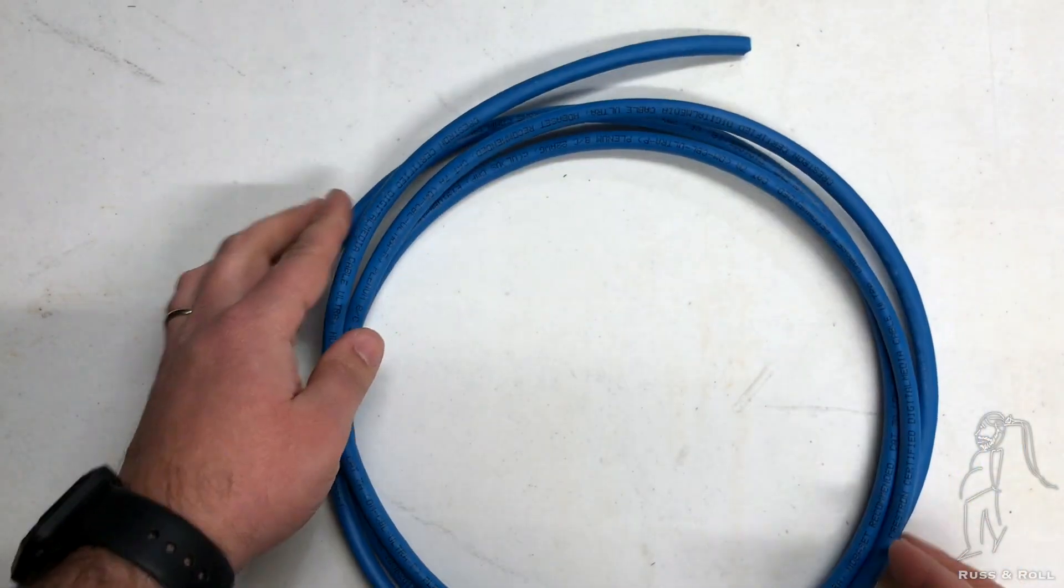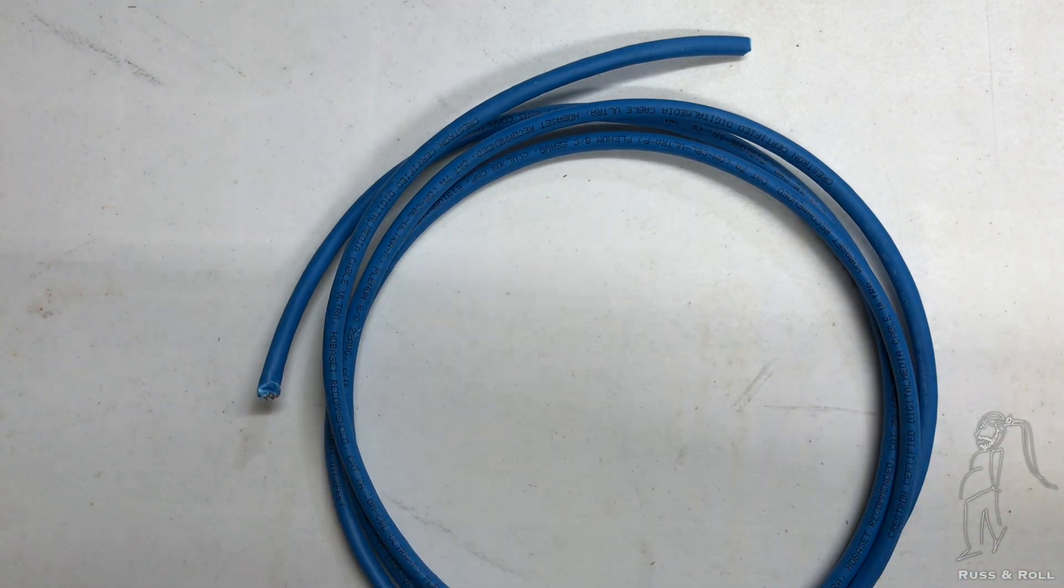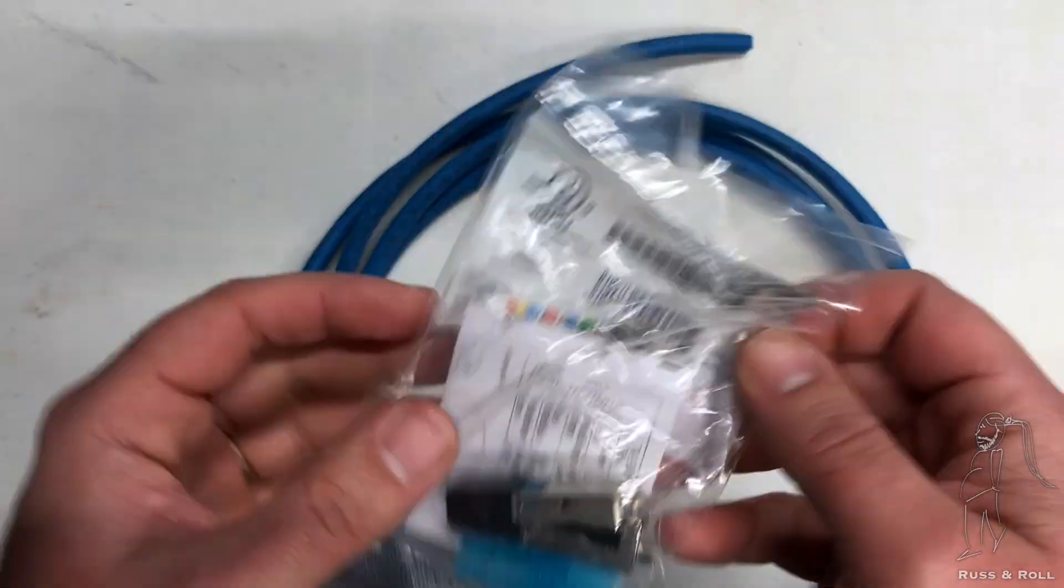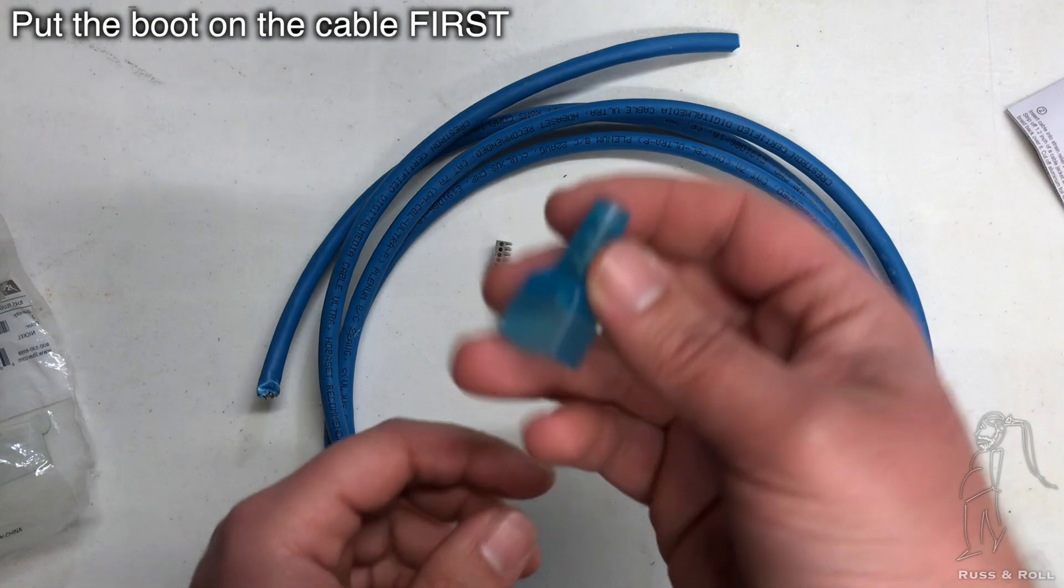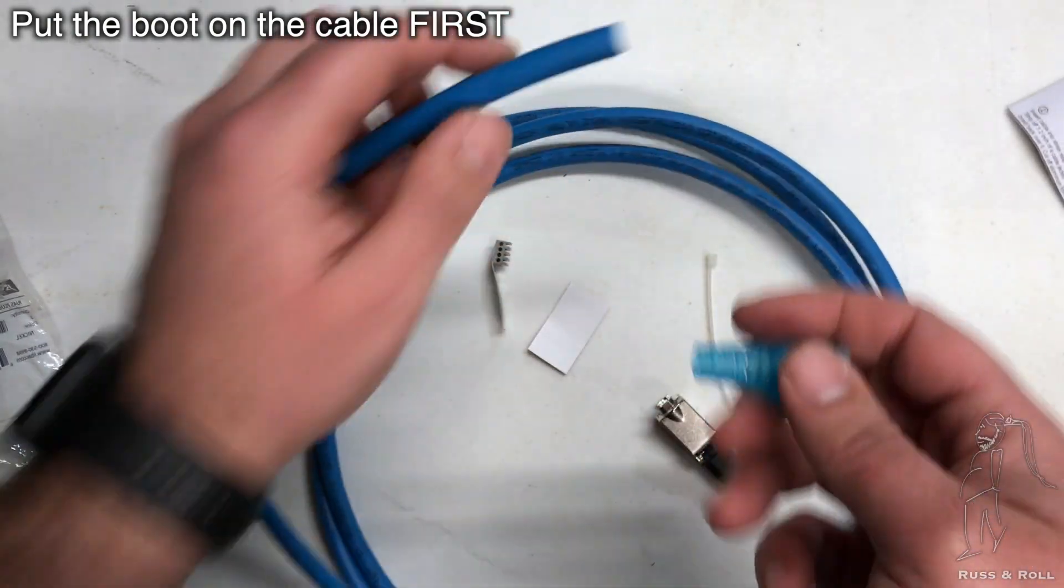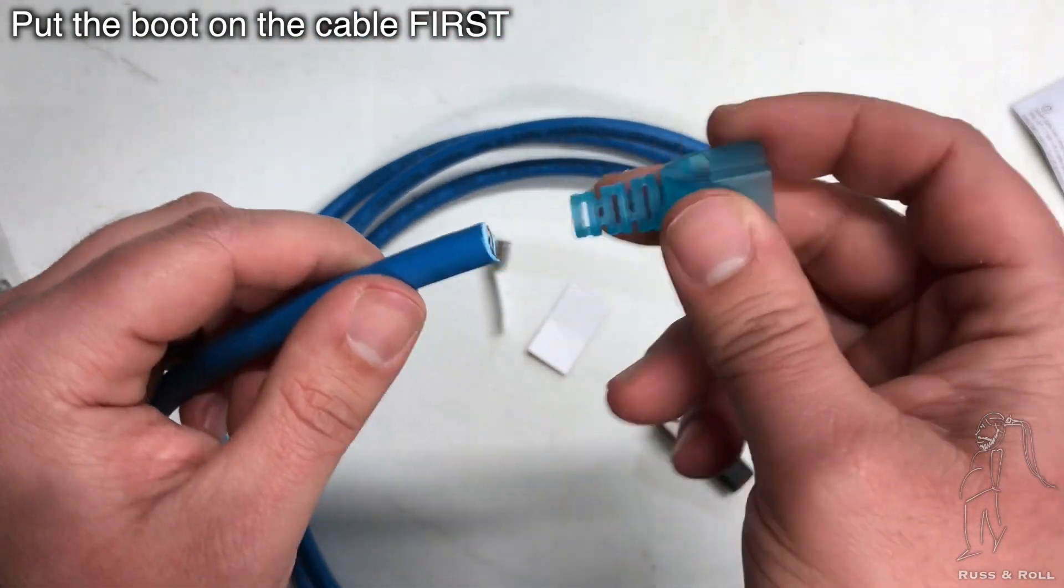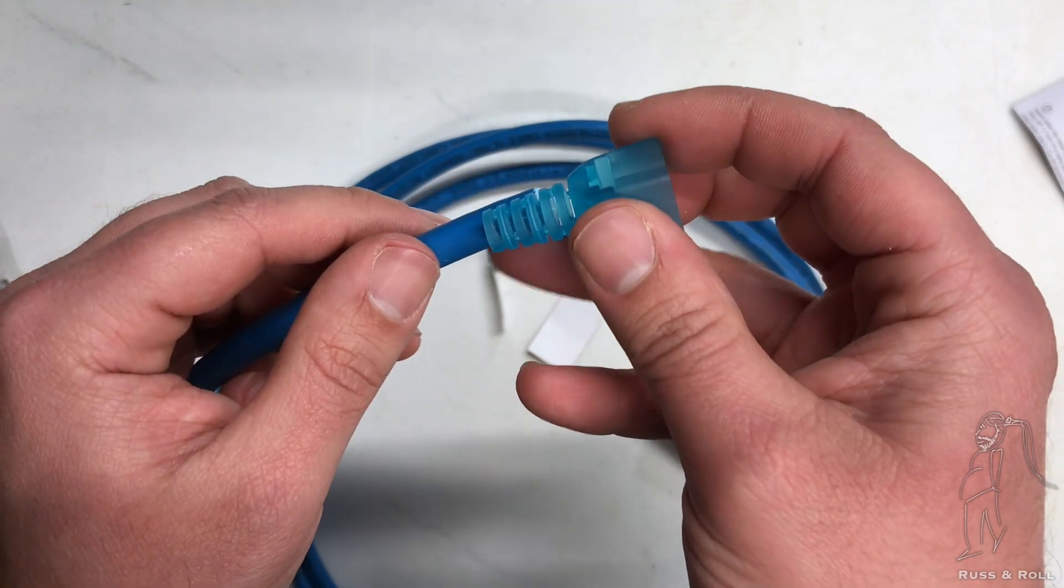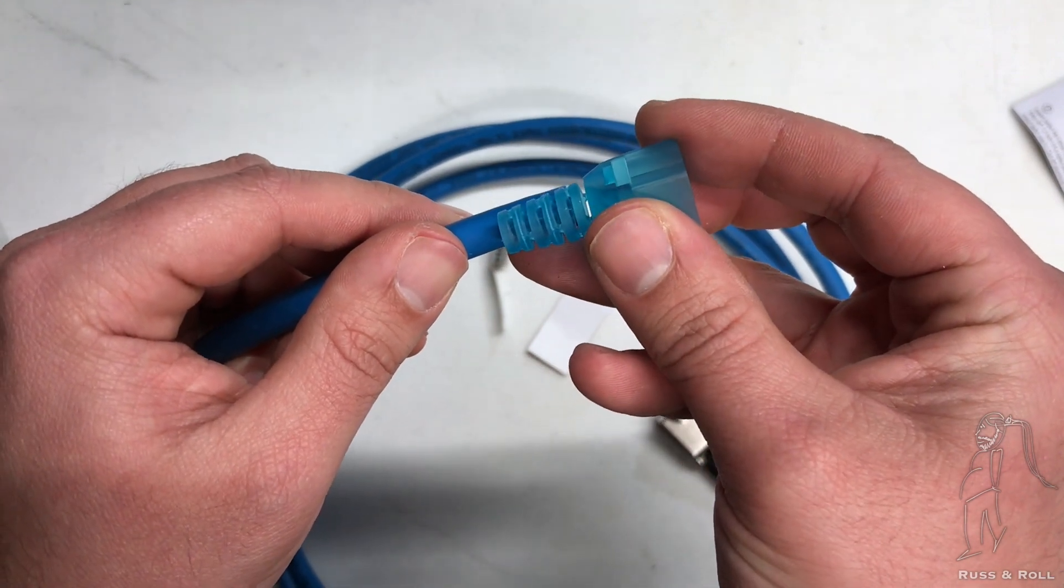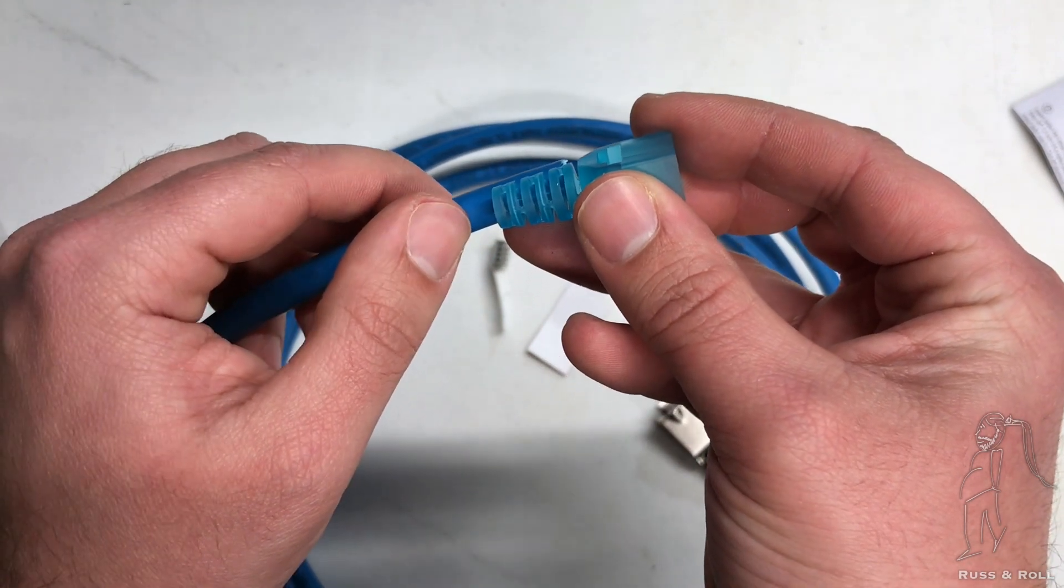So obviously the first thing we're going to do is start prepping the cable, right? Wrong. The first thing we're going to do is open the package of the connector and get the boot out of there. This boot is obviously going to go on the cable, but it looks like it doesn't fit. Luckily these boots are actually adjustable. They're made to be cut to size to fit different sizes of cable, different diameters.